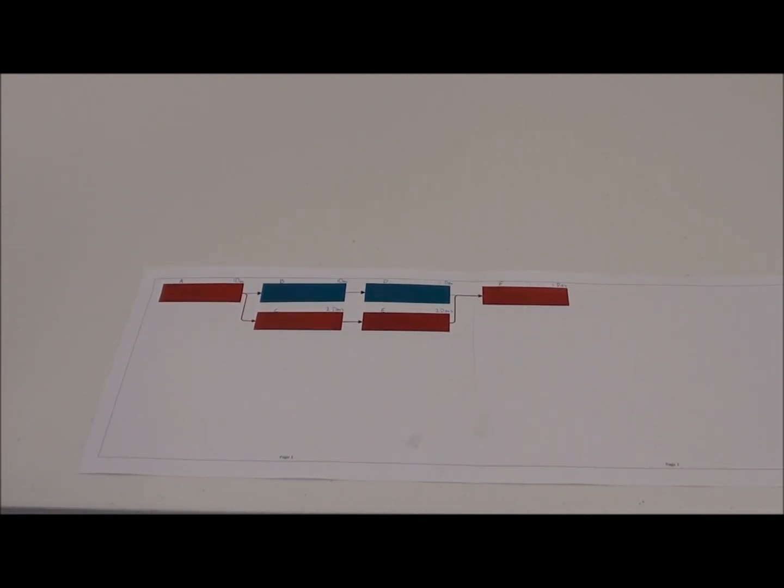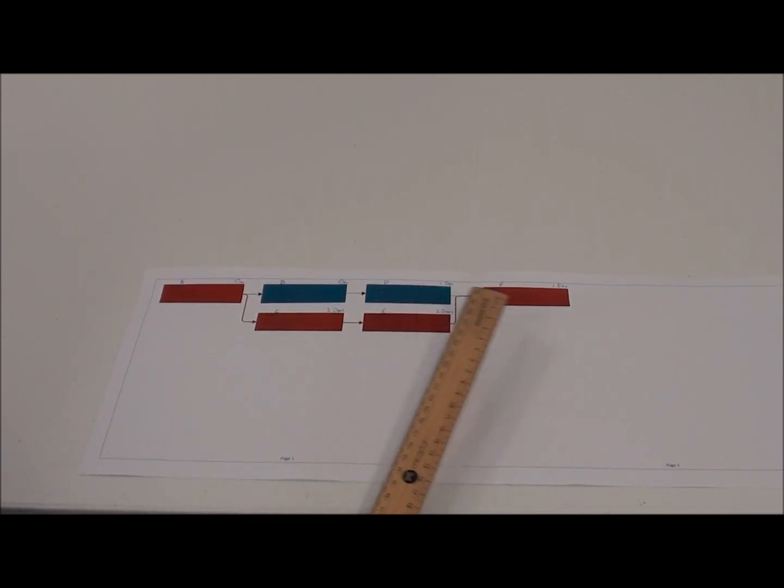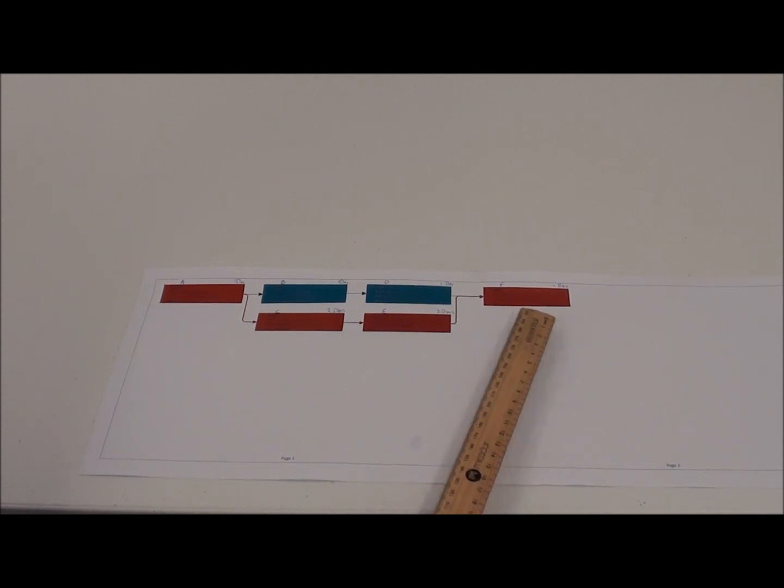Going into this PERT chart that I have set up in front of us, task A is one day, task B is one day, task D is one day, task F is one day, and task C and E are both two days.